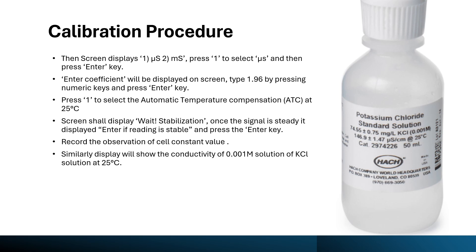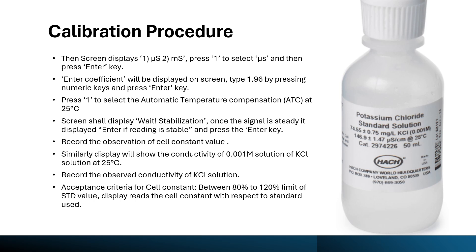The screen will also display the conductivity of the 0.001 molar KCl solution at 25 degrees C — record that conductivity value. The acceptance criteria for the cell constant value should fall between 80% to 120% of the standard value displayed for the cell constant. The acceptance criteria for conductivity should be 147 microsiemens per centimeter plus or minus 2.0%. Once both criteria — cell constant value and conductivity — are met, the calibration is passed.